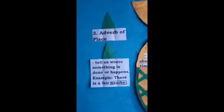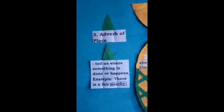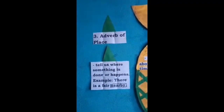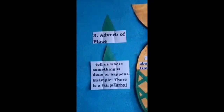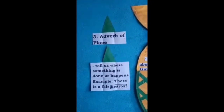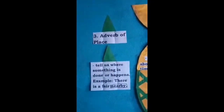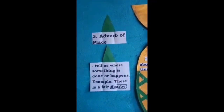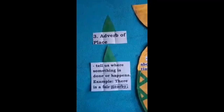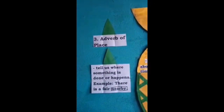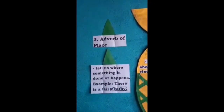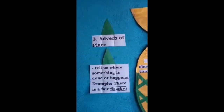The third one is the adverb of place, which tells us where something is done or happens. We use it at the end of a sentence. For example: there is a fear nearby.